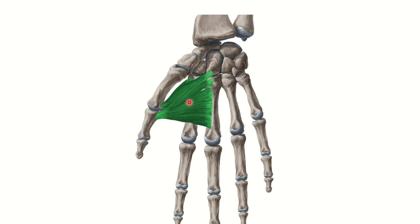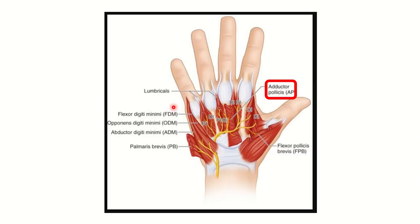Here we can see this muscle causes adduction of the thumb, and this muscle is known as the adductor pollicis muscle. The adductor pollicis is responsible for adduction of the thumb. Here we can see the adductor pollicis muscle — this is the cut edge of it — from here it attaches to the thumb.